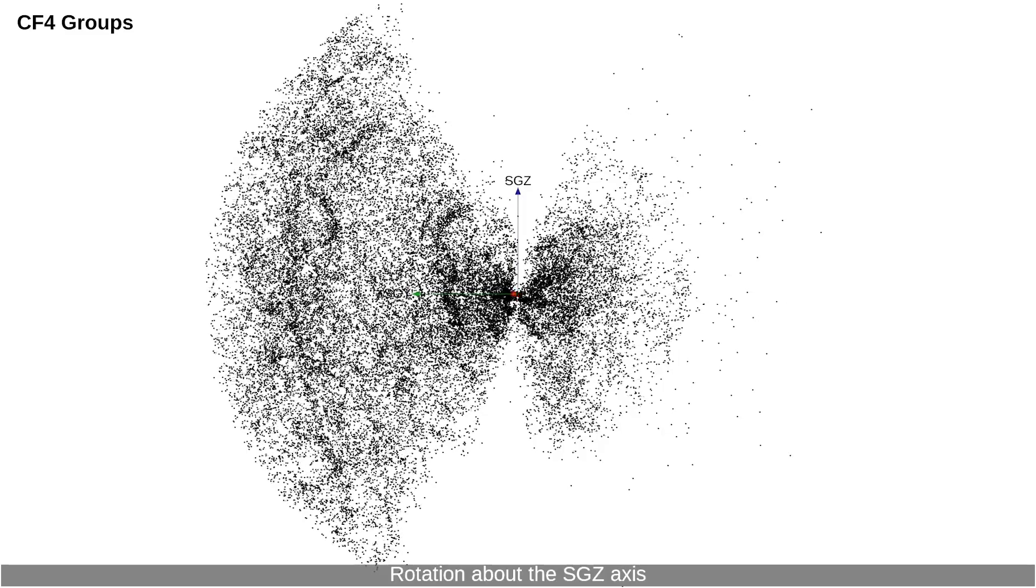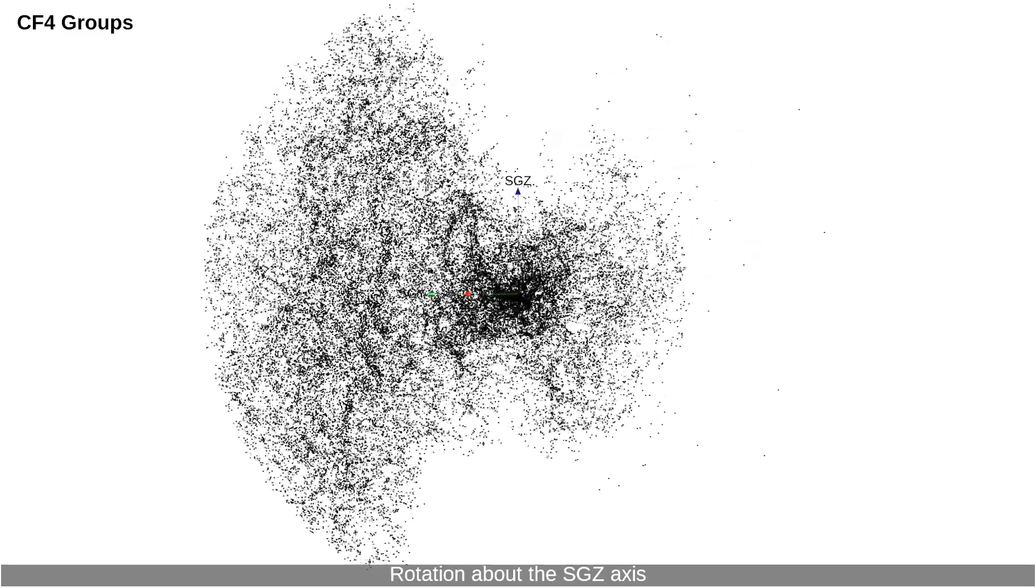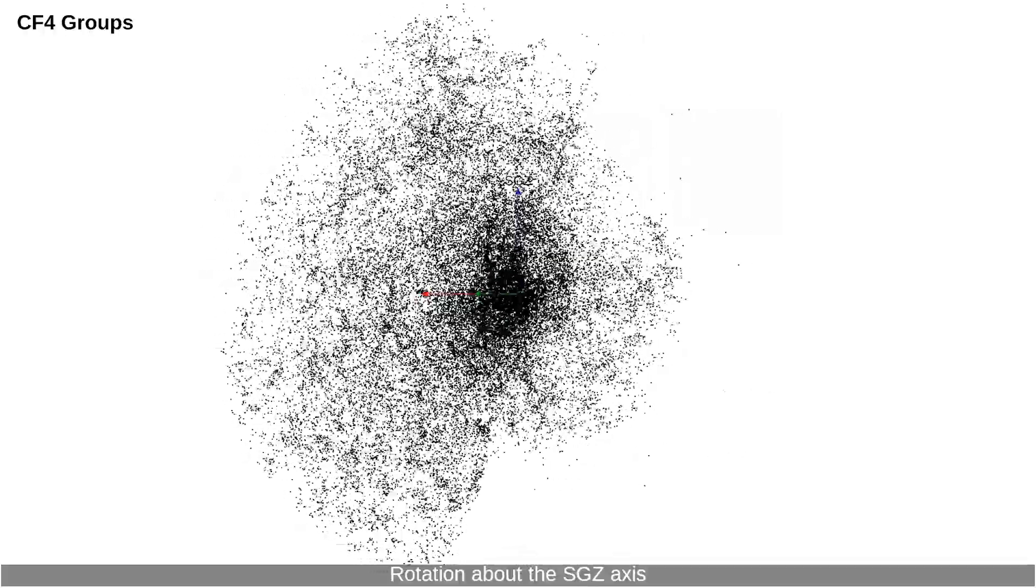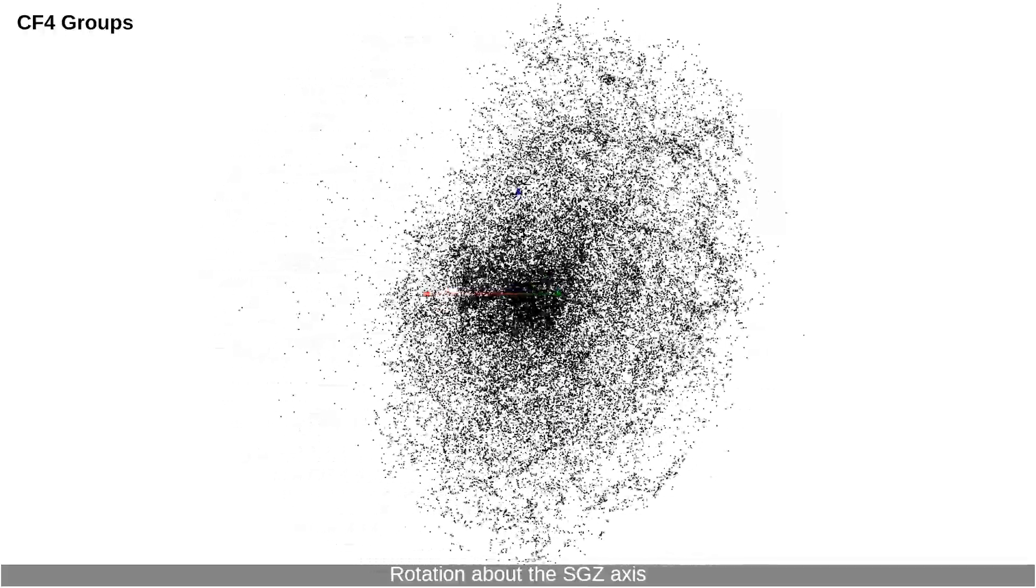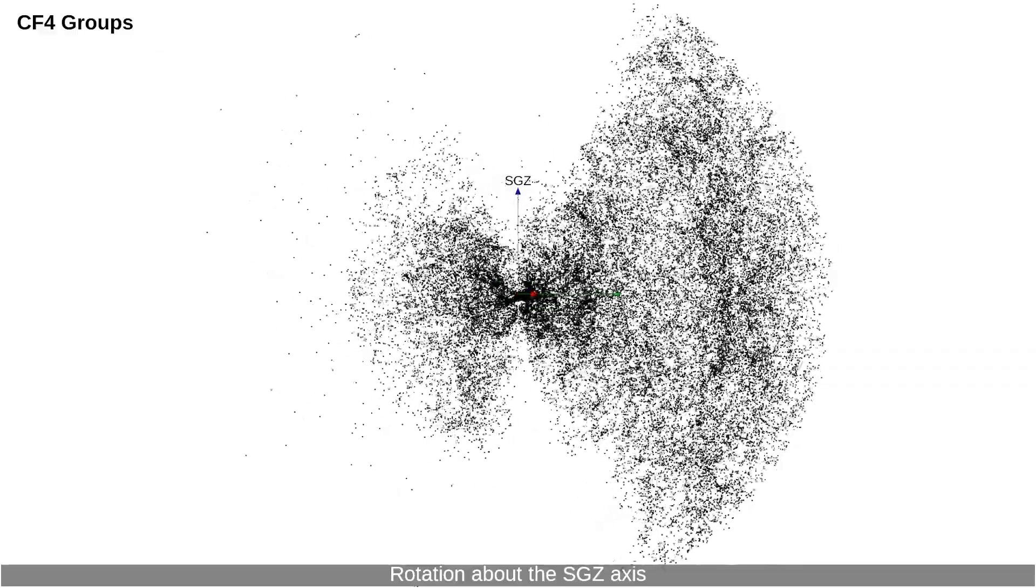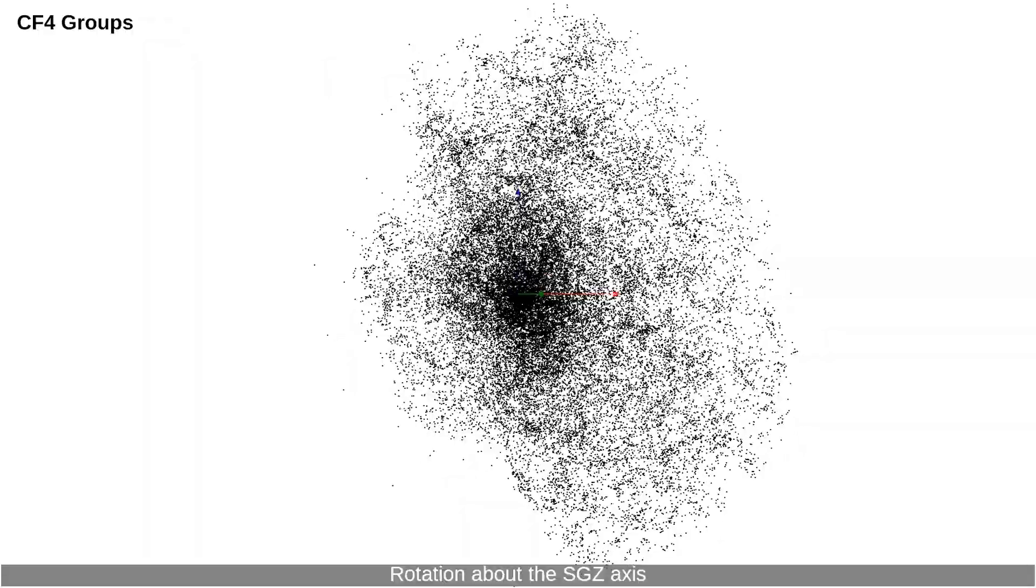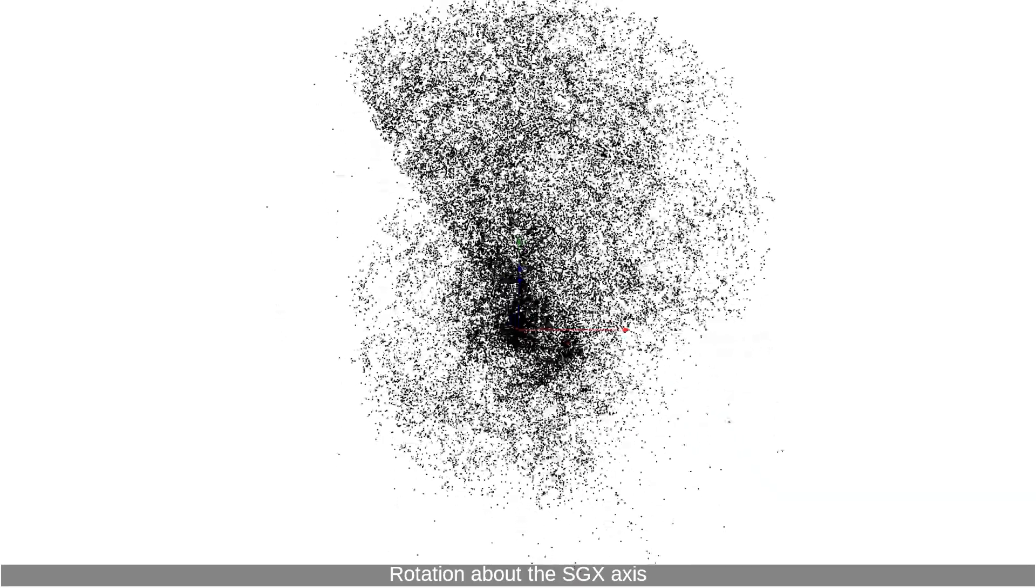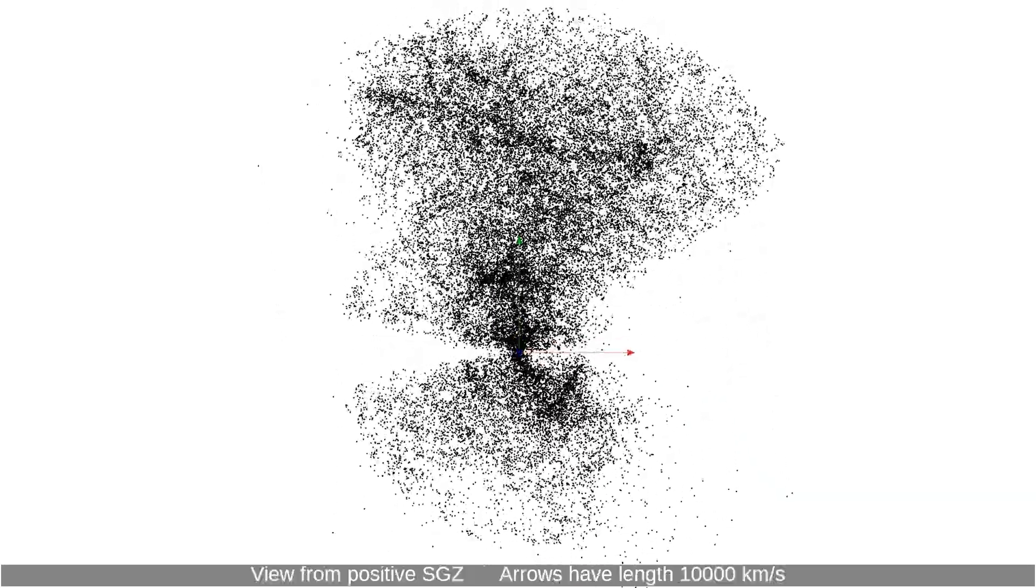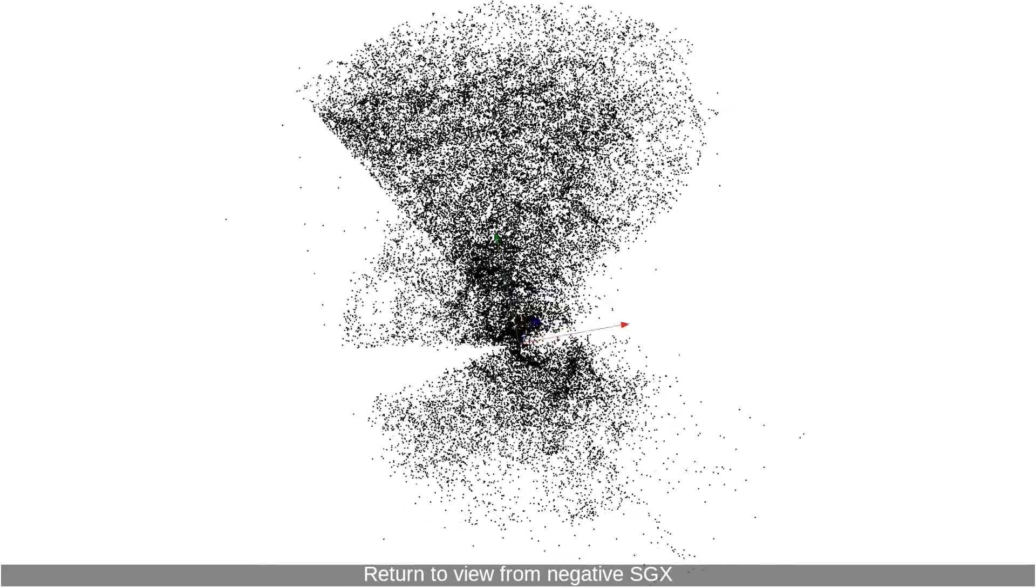Rotation about the SGZ axis. Rotation about the SGX axis. View from positive SGZ. Arrows have length 10,000 km per second. Return to view from negative SGX.